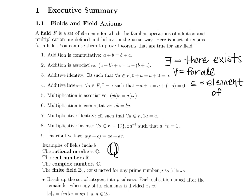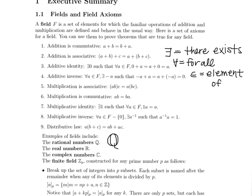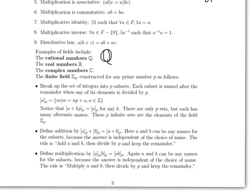There is a way that we can kind of manipulate the integers into a finite field. Finite fields are written as Z sub p. They are constructed for any prime number p as follows. The way to manipulate the integers into a type of field, which is a finite field, is that we break up the set of all the integers into p subsets. Each subset is named after the remainder when any of its elements is divided by p. And p will be given to you in a lot of the examples that we'll be doing in class.